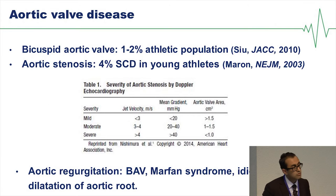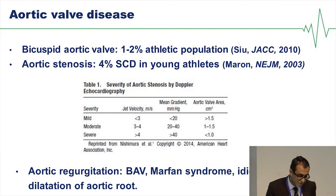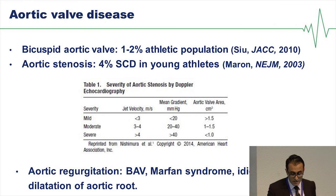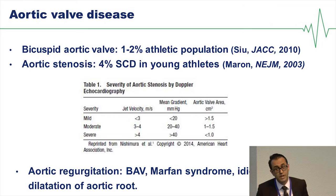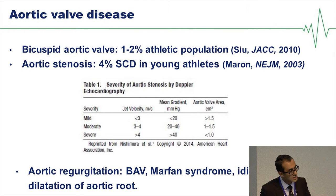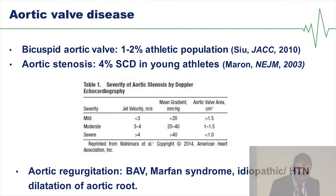Finally, the aortic valve — bicuspid aortic valve affects up to 2% of the athletic population, with aortic stenosis accounting for 4% of sudden cardiac deaths in young athletes. History is important, with syncope being the most common presenting symptom, followed by breathlessness and angina at more advanced stages. Echocardiography with specific criteria can help differentiate mild, moderate, or severe stenosis. Aortic regurgitation should also be considered, which may result from a bicuspid valve, Marfan syndrome, connective tissue disorder, or hypertension-related dilatation of the aortic root.